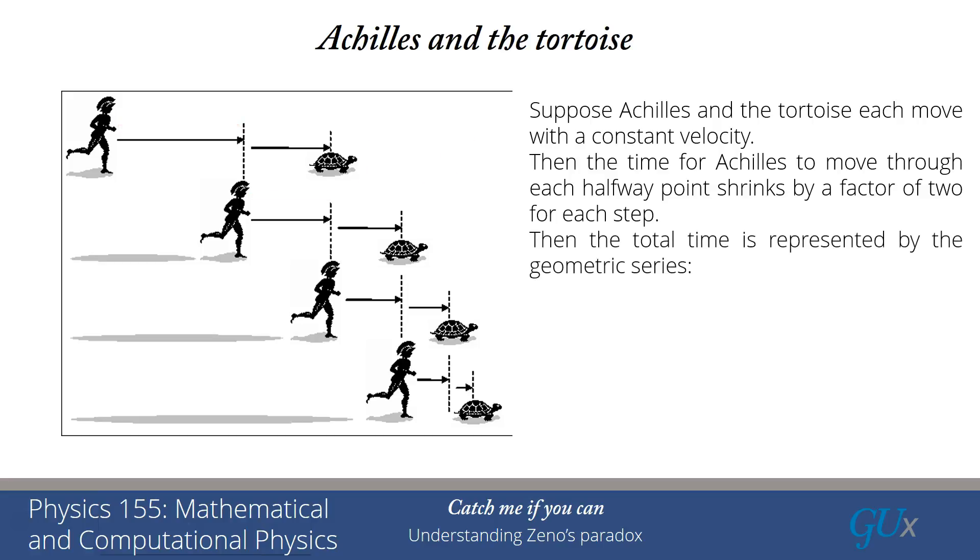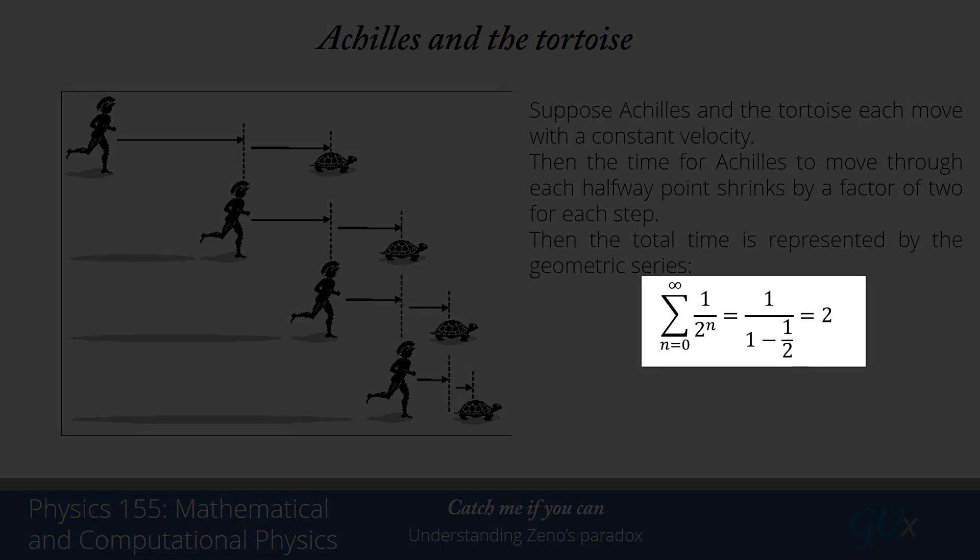And that means the total time is going to be represented by a series that we call the geometric series. And it's given by the sum from n equals zero to infinity of one over two to the n. So that would be one plus one-half plus one-fourth plus one-eighth plus one-sixteenth and so forth. And it turns out that the geometric series can be exactly summed and the answer is one over one minus a half and that equals two.